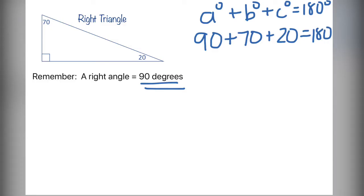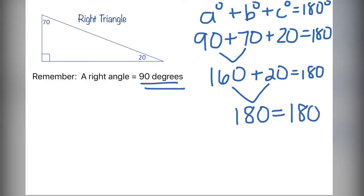If I add 90 with 70, I get 160. Then I add in the 20, 160 plus 20 will give me 180 degrees. That 180 equals 180. Therefore, we have proved the theorem again.